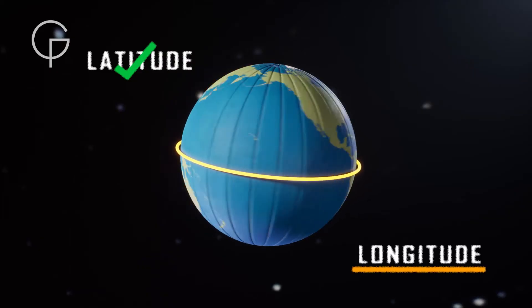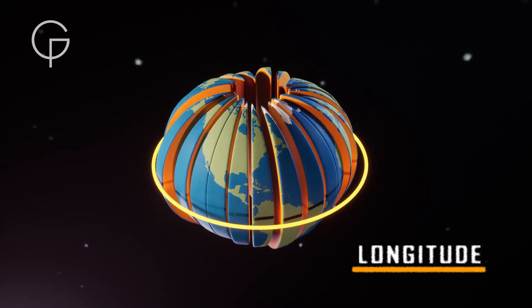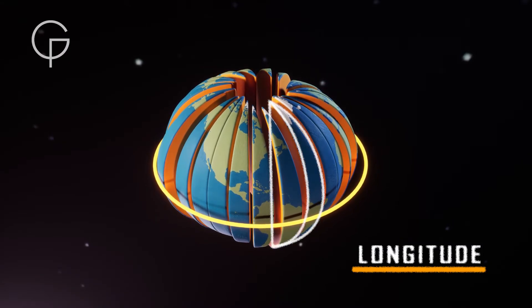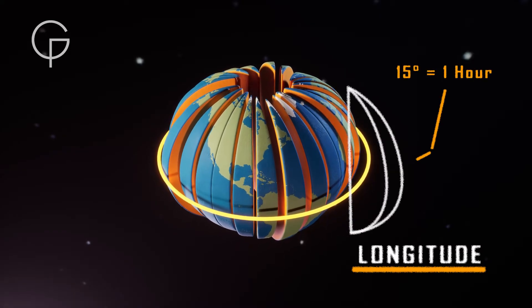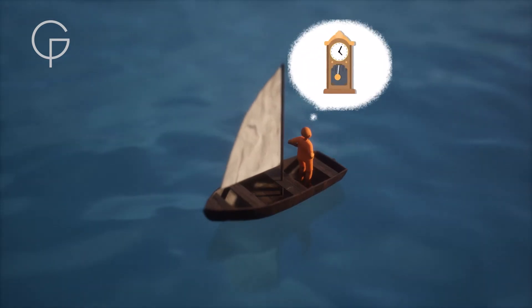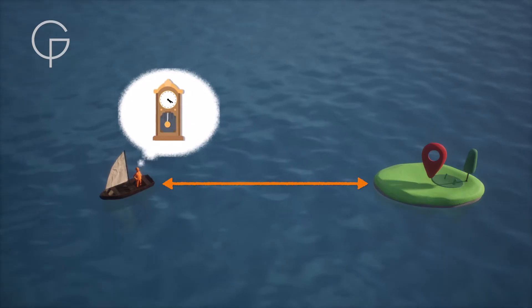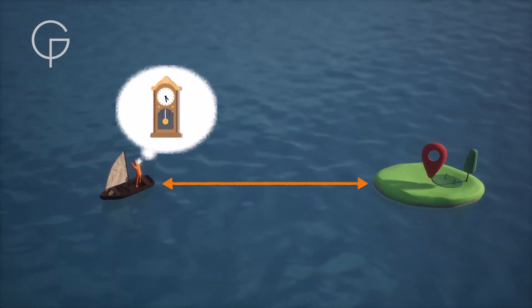Finding longitude was tricky. Imagine the Earth as an orange split into 24 segments, and each segment is 15 degrees apart and has a time difference of one hour. If a sailor knew what the time difference was between their current location and a given position, then they could calculate their longitude.